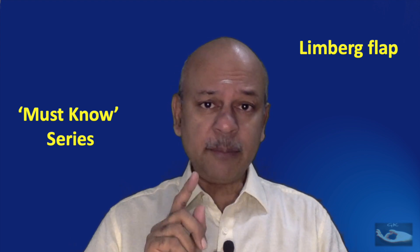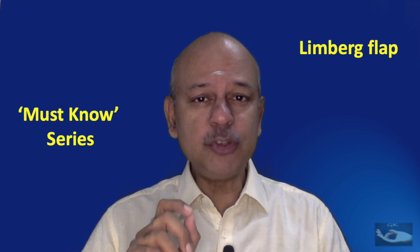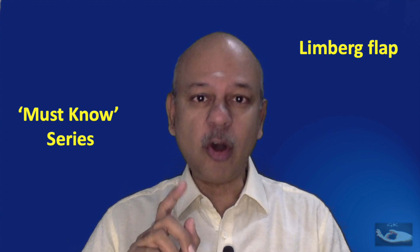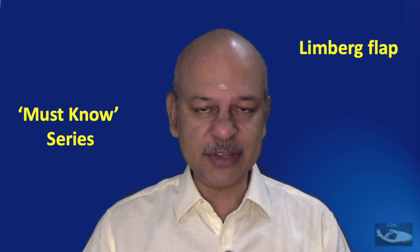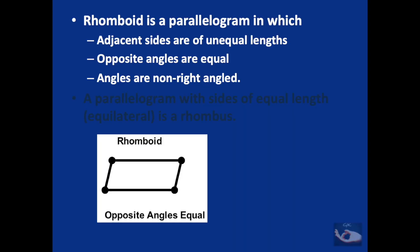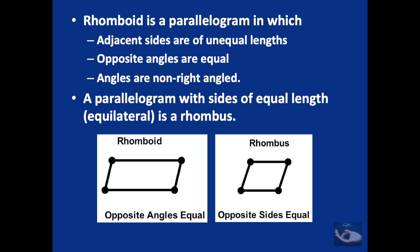One of the must-know concepts is the biogeometry of the rhombic flap, or the Limburg flap — how it is planned and what are the variations. First of all, the rhomboid is a parallelogram in which the adjacent sides are of unequal lengths, the opposite angles are equal, and the available angles are non-right-angled. If the sides are of equal length, it is called a rhombus.